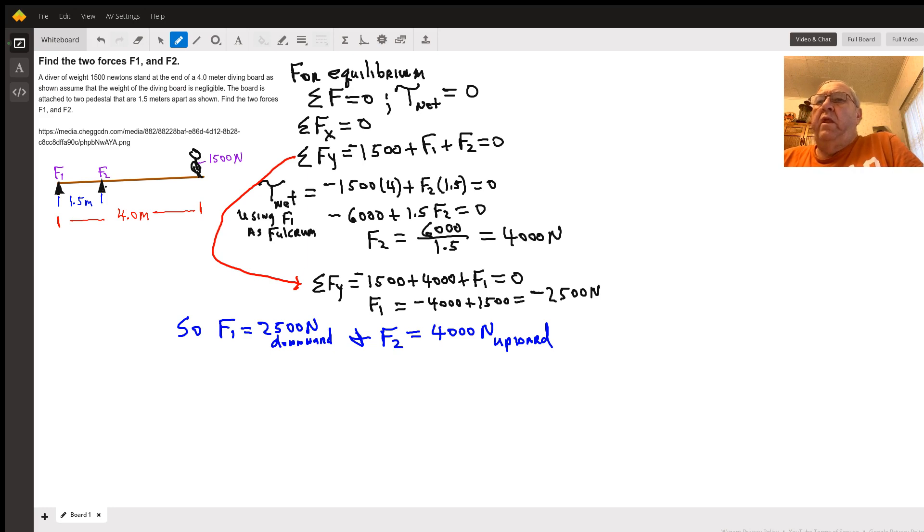When we do the torques, it's convenient to do it from a place where we can cancel out one of the torques in one of our variables, so we'll have two equations with just two unknowns and be able to solve very easily. So I placed the fulcrum at F1 and calculated my torques.